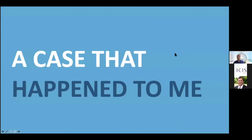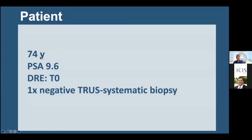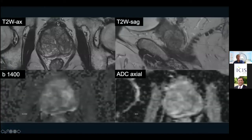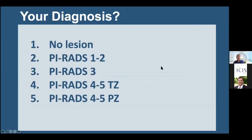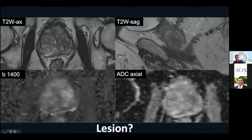Here is a case that happened to me: a 74-year-old man with a high PSA, DRE zero, and one-time negative TRUS systematic biopsy. T2 axial image, T2 sagittal image, B1400, and ADC are shown. Please give your diagnosis — no lesion, PI-RADS 1-2, PI-RADS 3, PI-RADS 4-5 in the transition zone, or PI-RADS 4-5 in the peripheral zone.